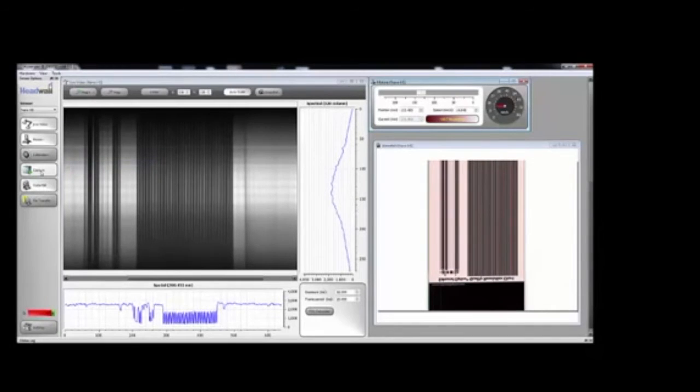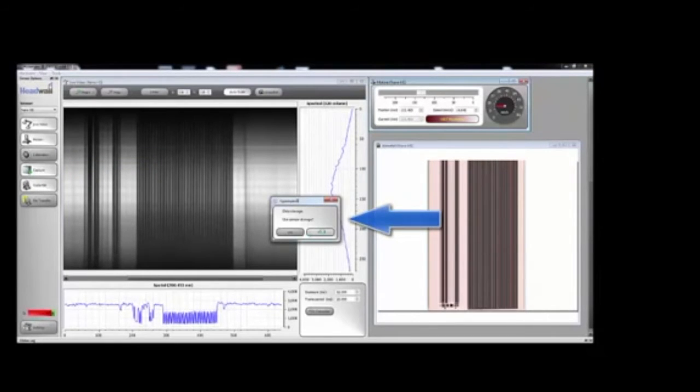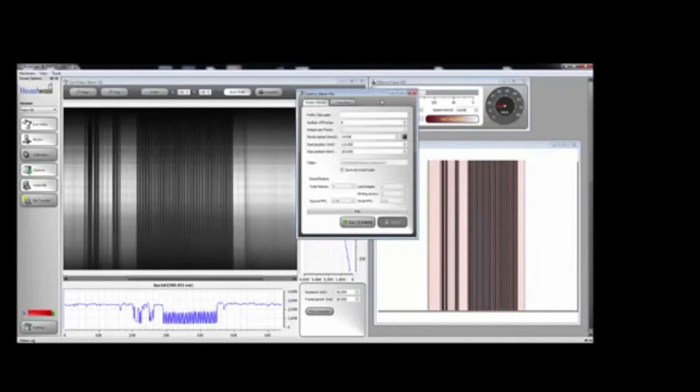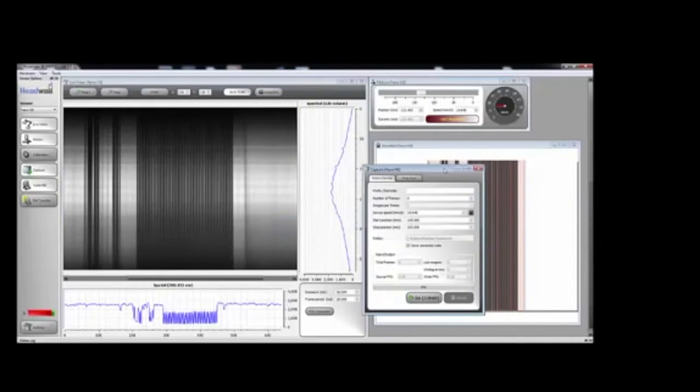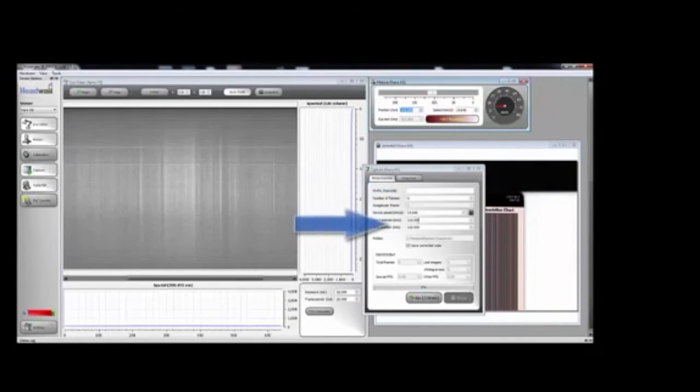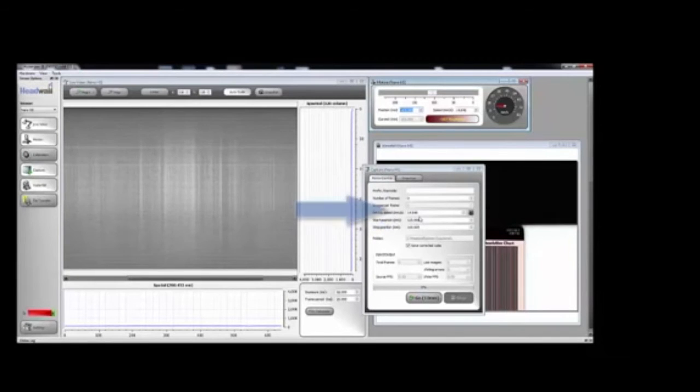We're using a nano for this example. That opens the option to save on either the sensor or the computer. Click no to save on the computer. The capture feature opens. Enter a unique name as well as the beginning and end points and speed from the motion control. When you complete, click the capture button.